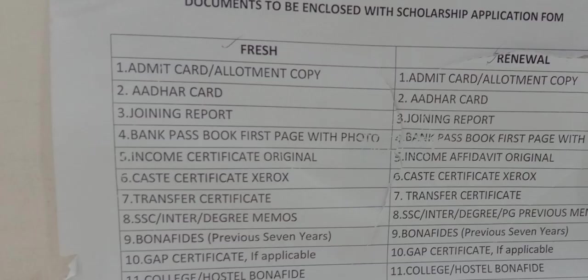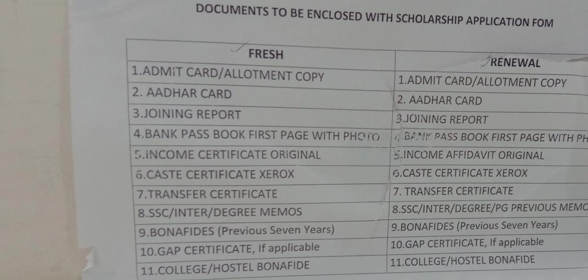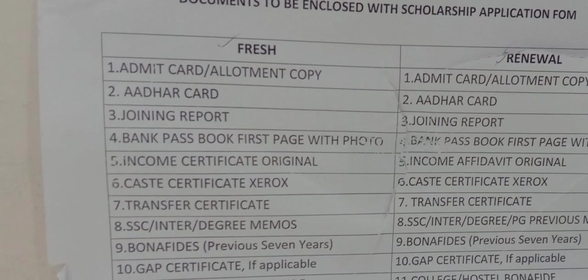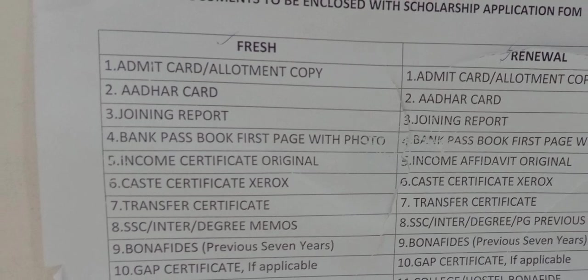Once you apply the scholarship, you have a scholarship form — the application form with these details. First one is Admit Card or Allotment Copy. You have an acknowledgement or allotment. And Aadhar Card Xerox. Joining Report is the Acknowledgement stamp — those two are also the same. And Bank Pass Book first page Xerox. Income Certificate — original Income Certificate is also submitted in the scholarship application form as part of college.